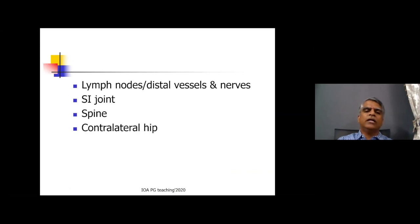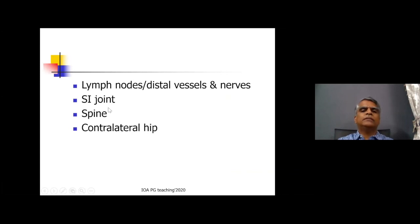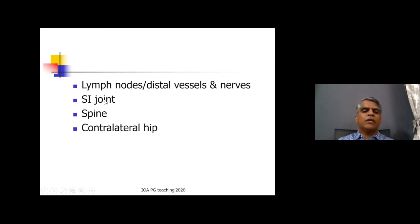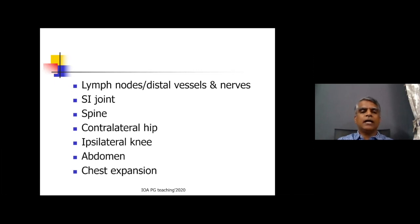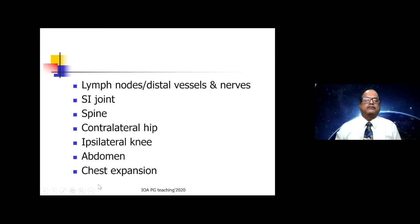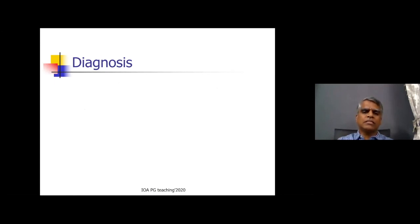To complete the examination, check for lymph nodes, vessels, and nerves. For the sacroiliac joint, do not do the pump handle test, Patrick's test, or FABER test in the presence of hip pathology, as hip involvement will cause pain and give a false result. Instead, check for direct tenderness over the posterior SIJ or perform compression-distraction test of the pelvis. Also check the contralateral hip, ipsilateral knee, abdomen, and never forget to check chest expansion.